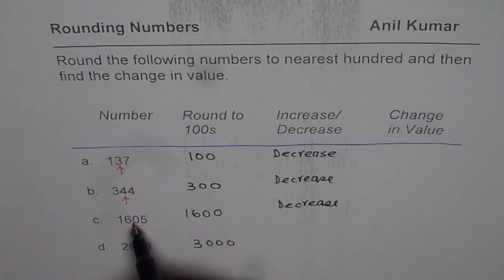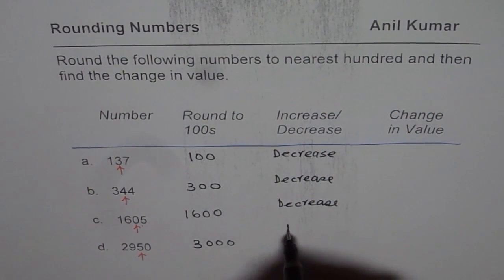Well, in tens place, we had a number which was less than 5. In the fourth, here in tens place, we had 5 or more, so the number increased. So we have increase in value.